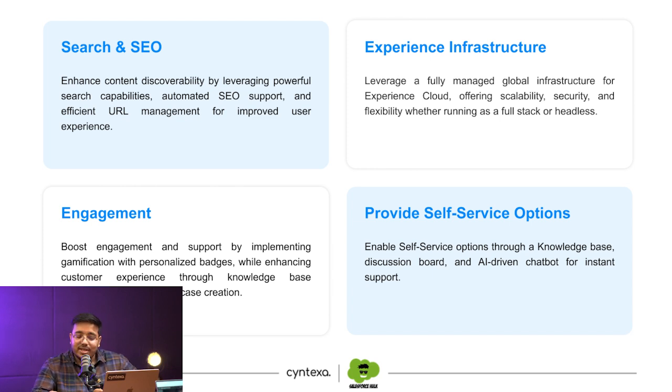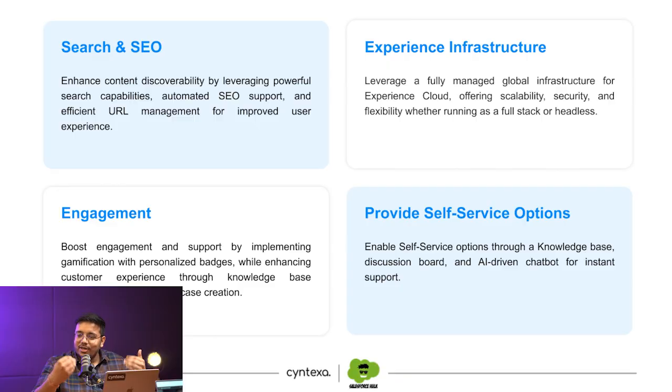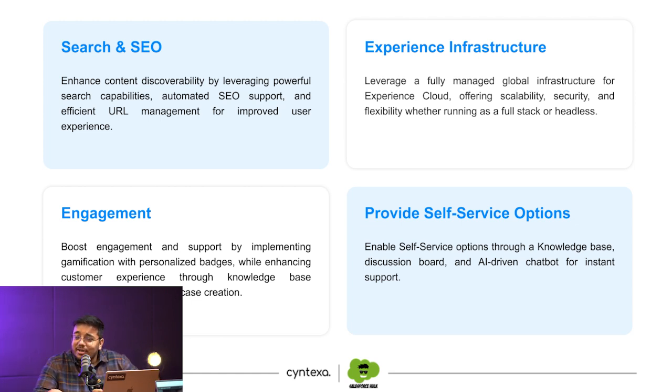We also have self-service options where a customer can come in and check the knowledge base — for example, if their laptop is not turning on, they get a knowledge article with probable causes. Then we have discussion boards where others may be asking the same question. A mobile brand, OnePlus, utilized these capabilities extensively to build brand loyalty and identify what customers are looking for. We can also utilize AI-driven chatbots along with these capabilities.